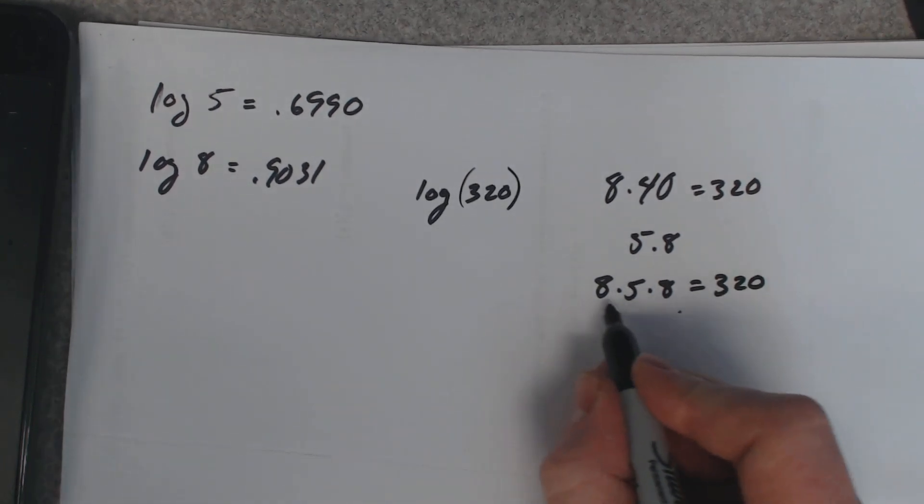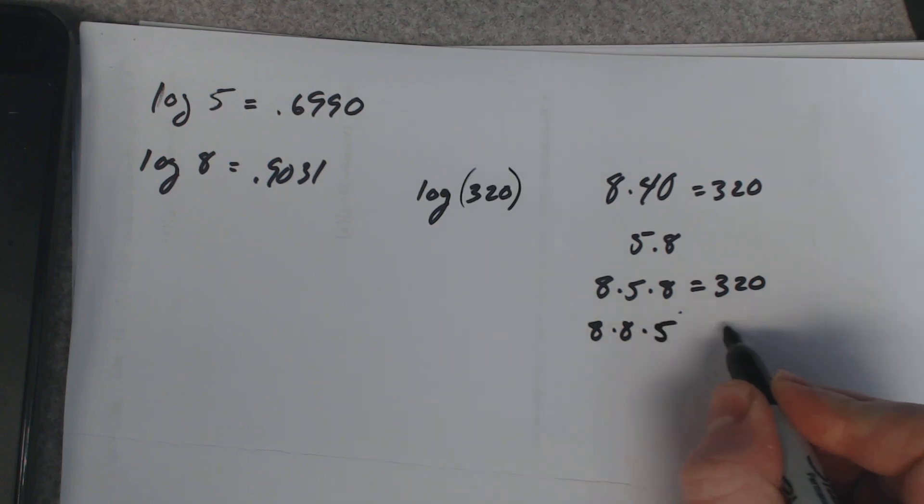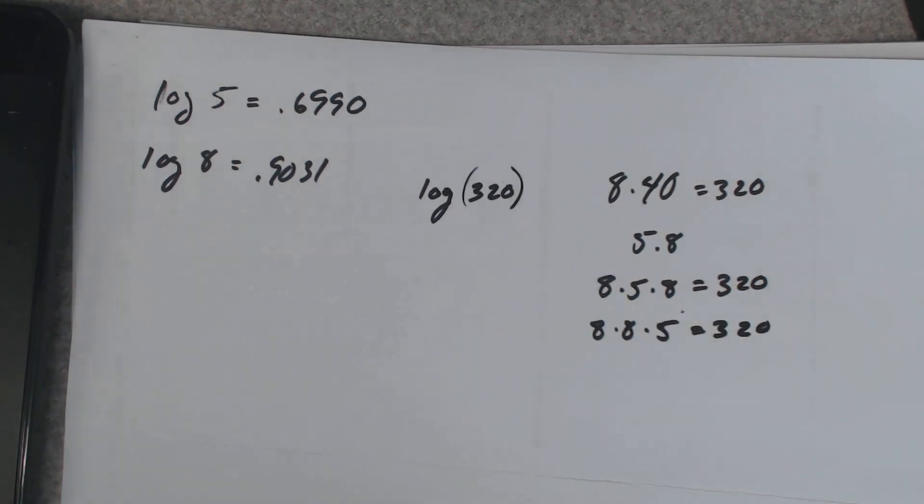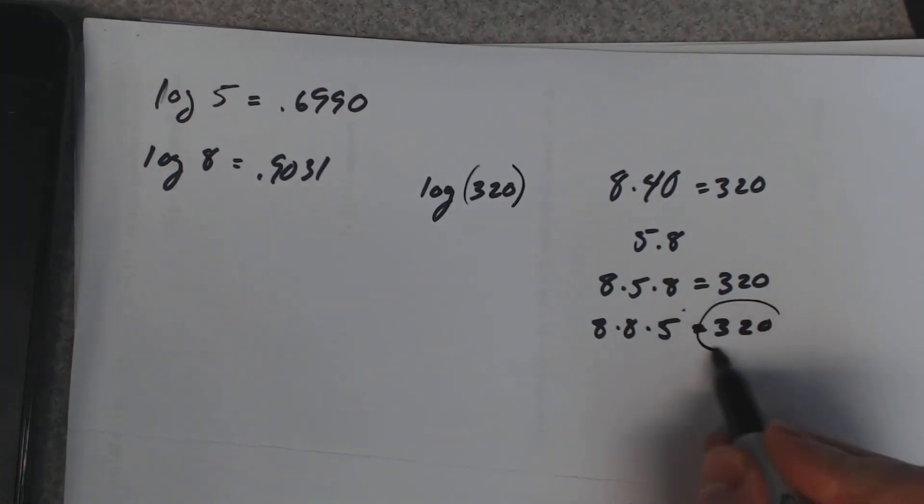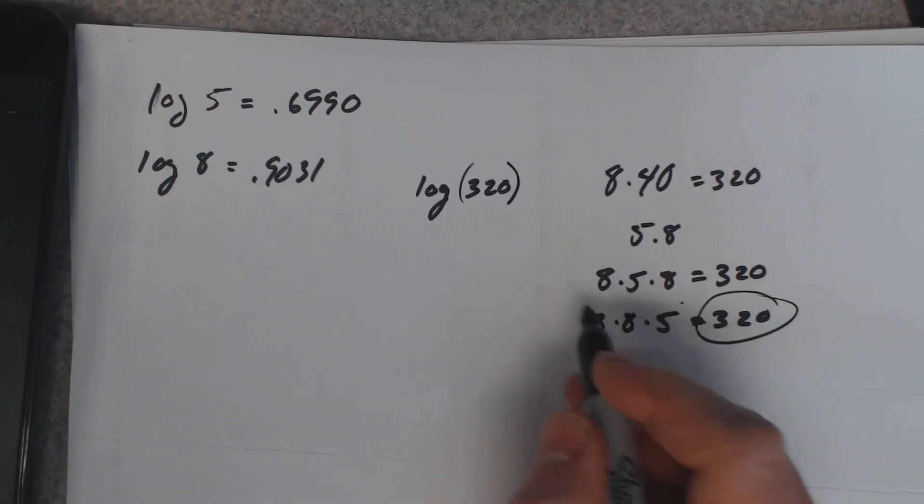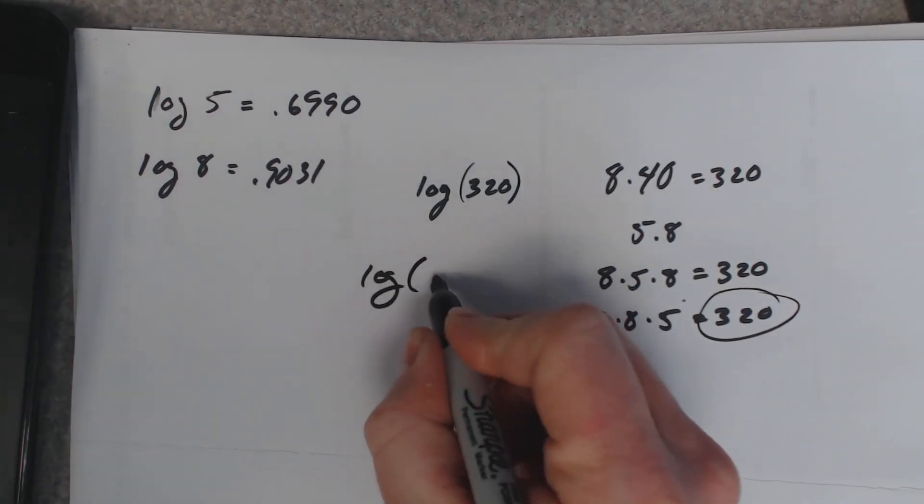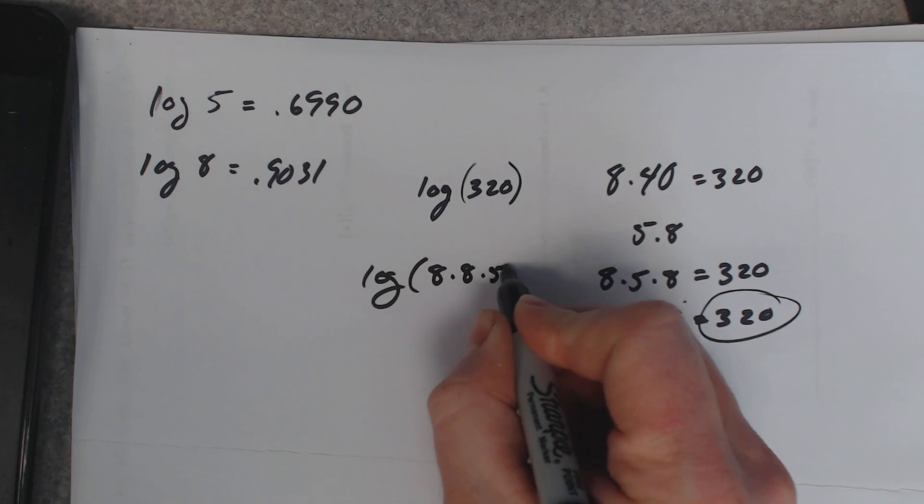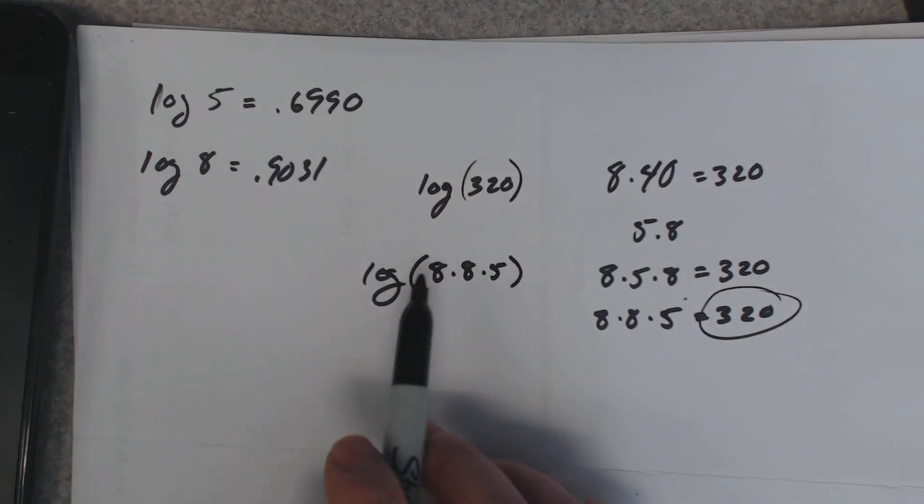I'm going to rewrite it, it doesn't matter what order you multiply in. So I'm going to rewrite 320 as 8 times 8 times 5 and now you can use the properties of logarithms to separate these out.